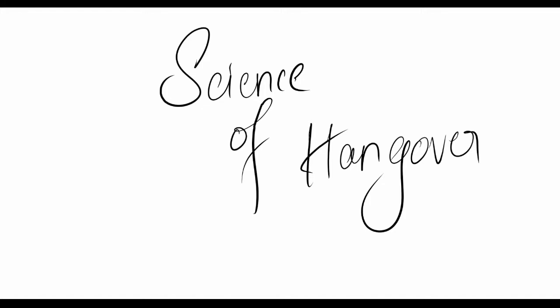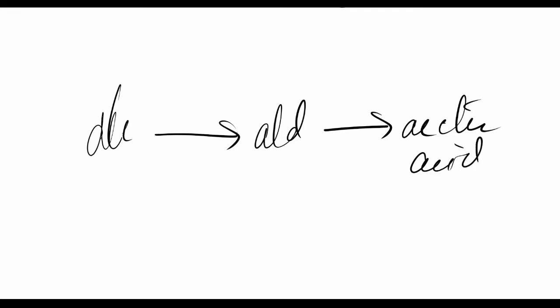Now what happens in the hangover? Alcohol is consumed, alcohol gets converted to aldehyde, aldehyde gets converted to acetic acid. And given the fact that liver is your largest gland in the body, yes it does this work efficiently and completely. Good.